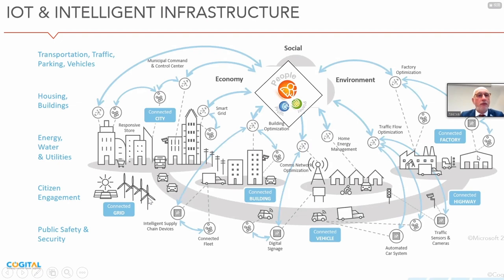Here you have an overall picture of intelligent infrastructure. In this graph I have indicated the three basic aspects of sustainability: planet, people, profit — or environment, social aspects, economy. You see connected grids, connected cities, smart grids, connected vehicles, connected highways, connected factories, traffic flow optimization, home energy management, and so on. In these smart cities, we are all connected.